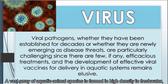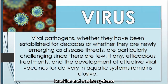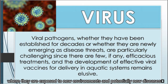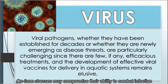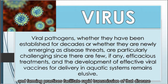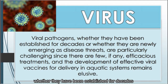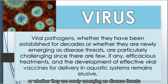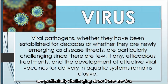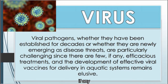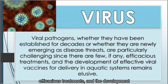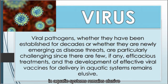A vast array of aquatic animal species is farmed in high density in freshwater, brackish, and marine systems where they are exposed to new environments and potentially new diseases. On-farm stress may compromise their ability to combat infection, and farming practices facilitate rapid transmission of disease. Viral pathogens, whether established for decades or newly emerging, are particularly challenging since there are few, if any, efficacious treatments, and the development of effective viral vaccines for delivery in aquatic systems remains elusive.